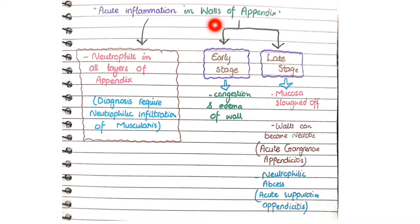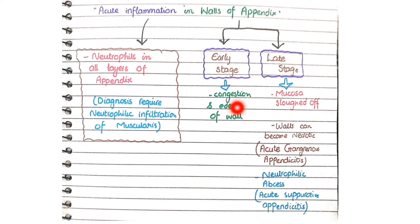The second keyword is changes in the walls of appendix. In the early stage you see congestion and edema of the wall. Congestion is characterized by congested blood vessels in the lamina propria and submucosa, and edema of the walls means that the walls will become thickened in size.